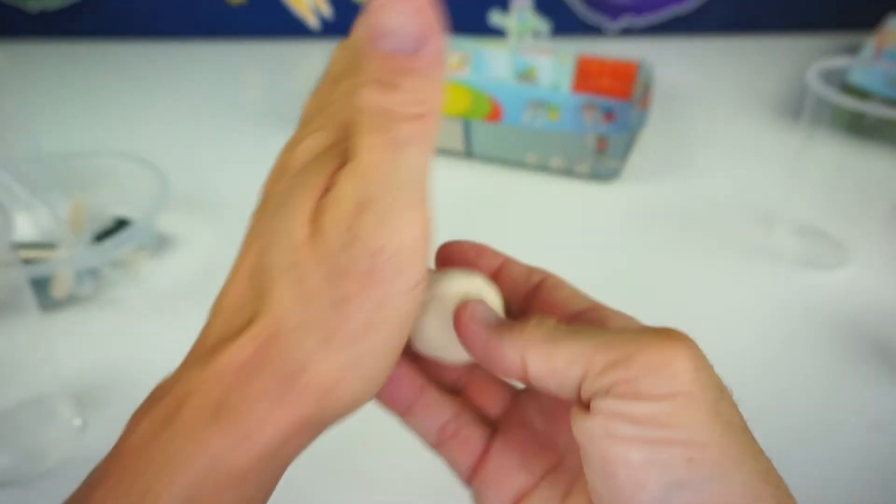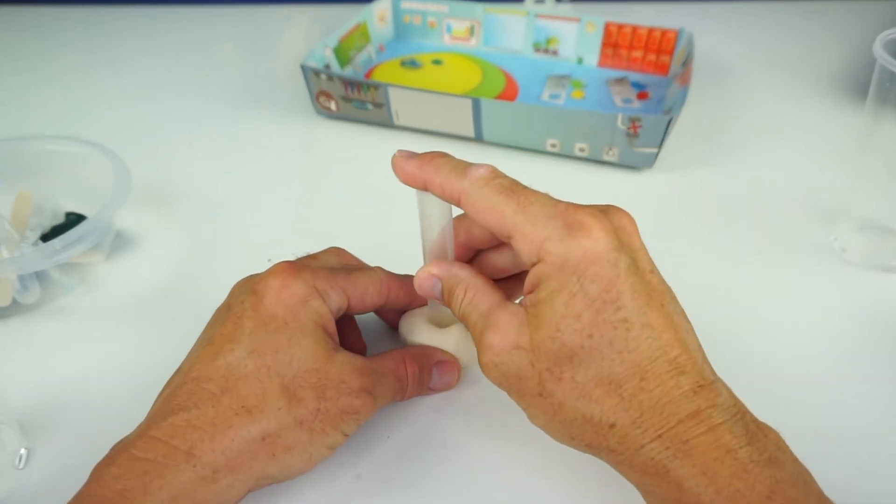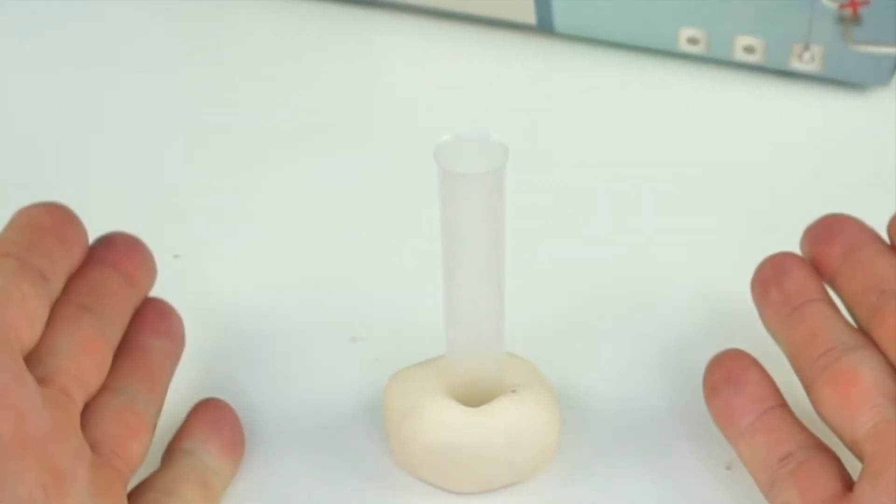Step number one tells me to make a little ball with the modeling compound, place it on the work table and press the tube onto it. The ball will support the tube. Alright, so let's take our Play-Doh, make it into a ball, put it right here and then let's take our test tube and insert the test tube and it should stay. And voila!